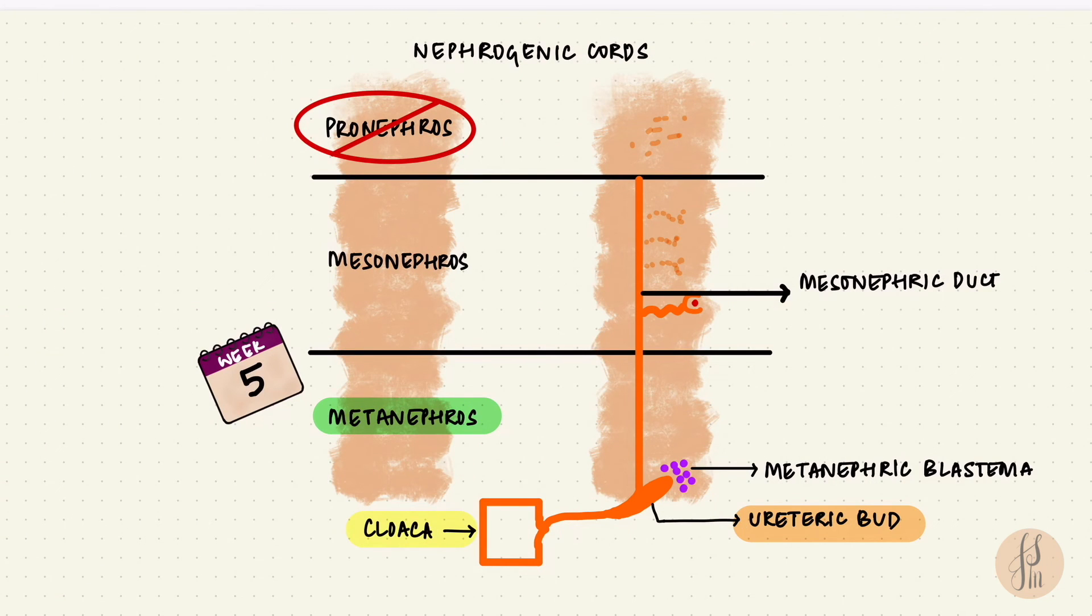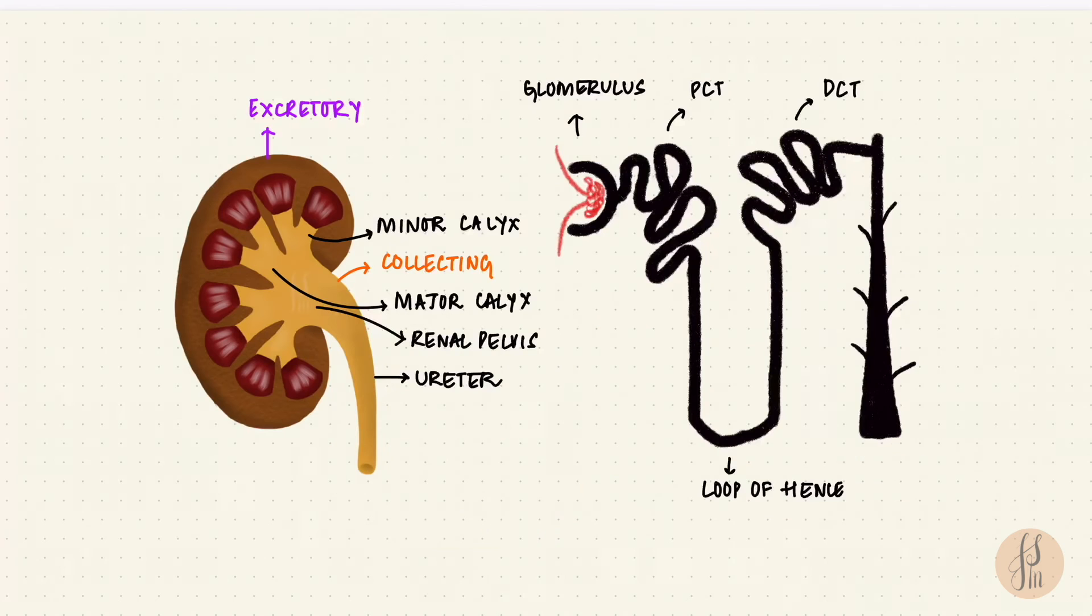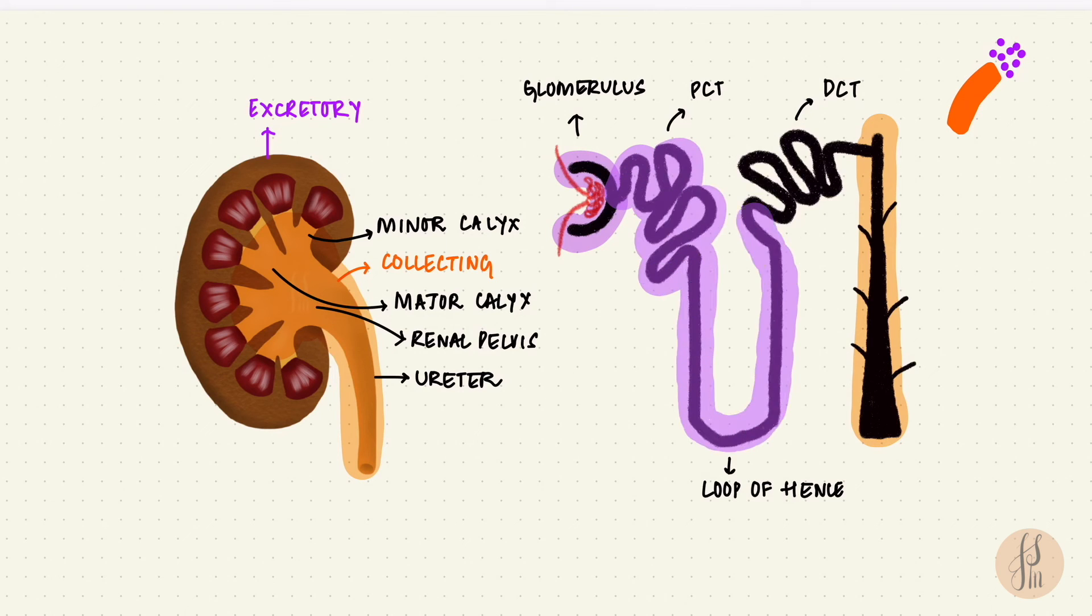So the ureteric bud induces the metanephric blastema, and that in turn induces the ureteric bud. So the ureteric bud forms the calyces, the renal pelvis, and the ureter, so everything from the collecting duct downwards. And the metanephric blastema forms the excretory portion from the glomerulus to the distal convoluted tubule.